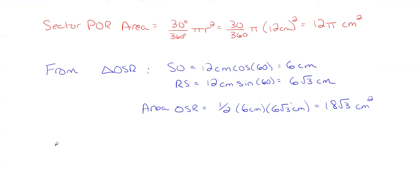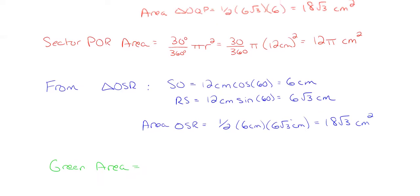Which basically is going to be our sector PRO but we'll just write everything out here so you can see it. So our first area was the 18 square roots of 3 and we're going to add that with our sector area of 12 pi centimeters squared.